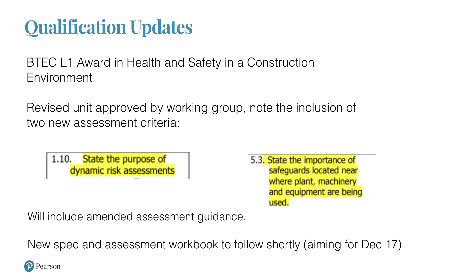One particular change to highlight is the BTEC Level 1 Award in Health and Safety in the Construction Environment. This is a popular qualification — it was launched to improve health and safety knowledge specifically for labourers, because prior to that there were no formal qualifications for labourers. It is approved by CITB as a qualification that can lead to the green card for labourers, and many of you deliver it both in college and as private training providers.